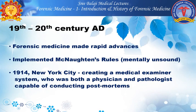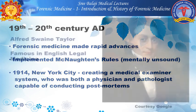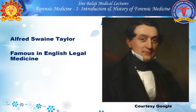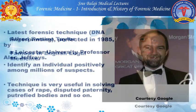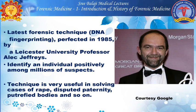In the 19th and 20th century, forensic medicine made rapid advances. McNaughton's rules in case of mentally unsound persons were implemented. In 1914, New York City created a medical examiner system with a physician and pathologist capable of conducting post-mortems. Alfred Swain Taylor was famous in English legal medicine. The latest forensic technique of DNA fingerprinting was perfected in 1985 by Leicester University professor Alec Jeffreys, who was able to identify an individual positively among millions of suspects. This technique is very useful in solving cases of sexual assault, disputed paternity, putrefied bodies and so on.